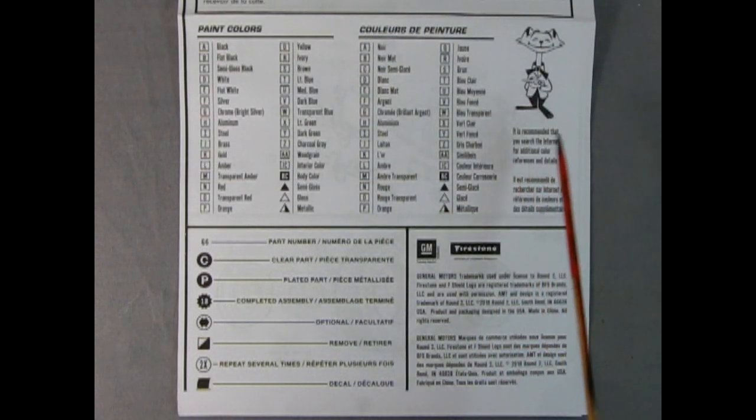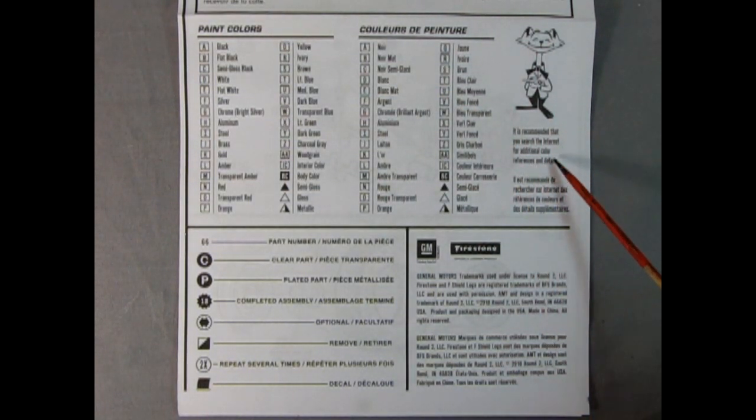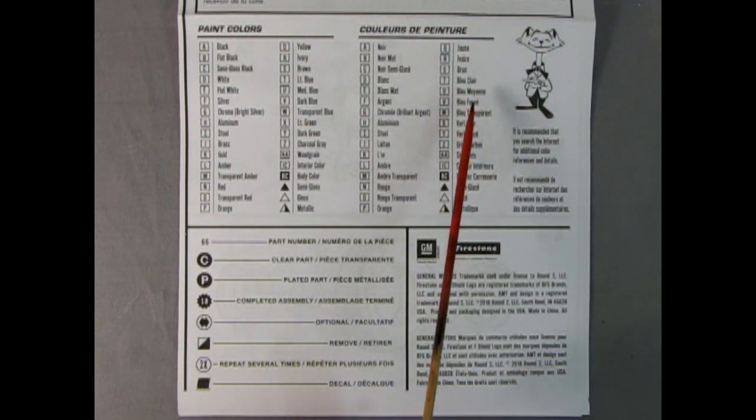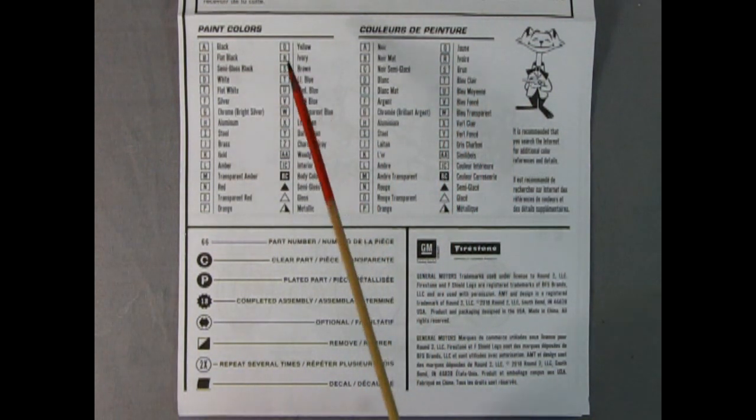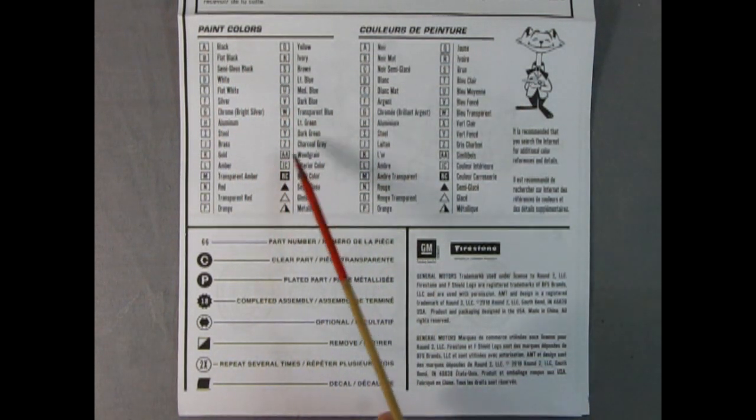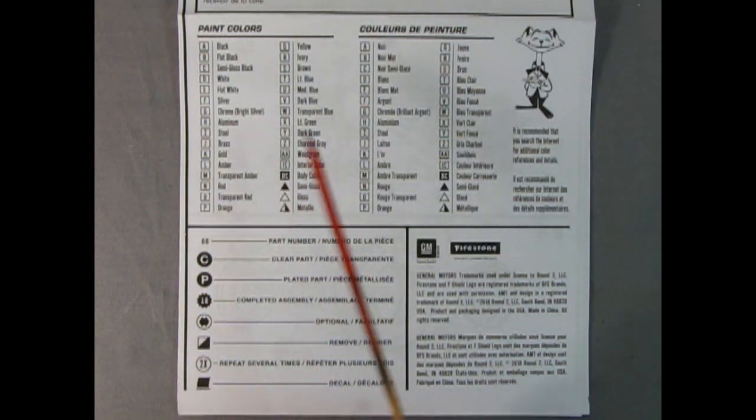Here we have it for all you hepcats. We have the cat from AMT saying it is recommended you search the internet for additional color references and details. Far out, man! What's the internet? Now anyway, this isn't 1960, this is 2023 and here we have all our paint colors listed from A to Z including AA, IC, BC and three triangles. Isn't that funky?